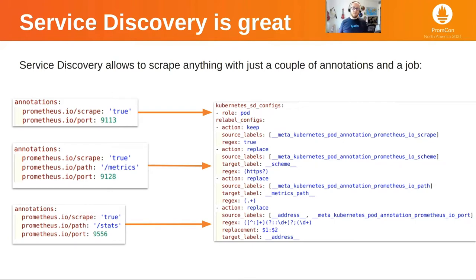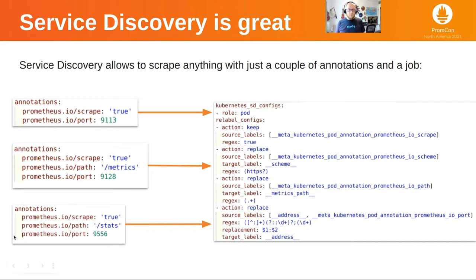Here there are some examples you're probably familiar with. In this pod, for example, we added the scrape annotation equals true and the port number. Here we added the path, and all of them will be scraped with just a single job that you have surely seen before.